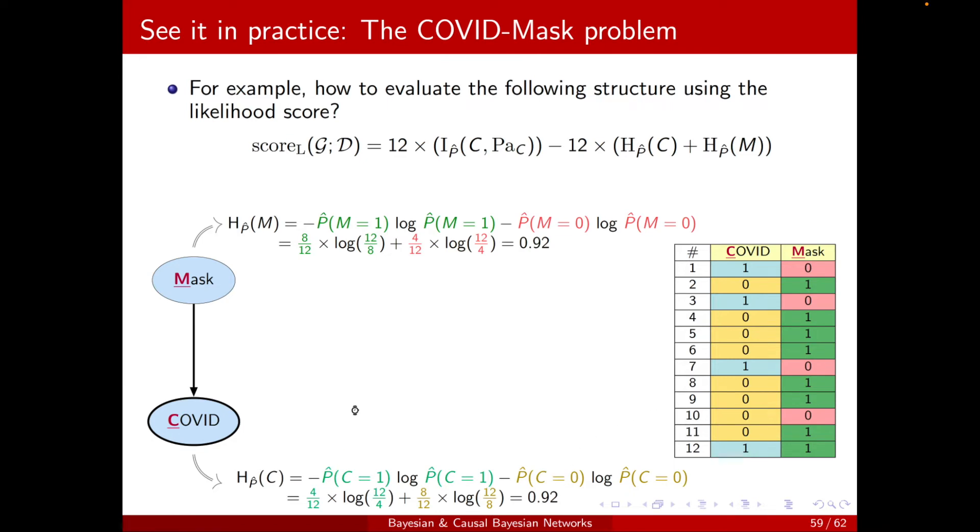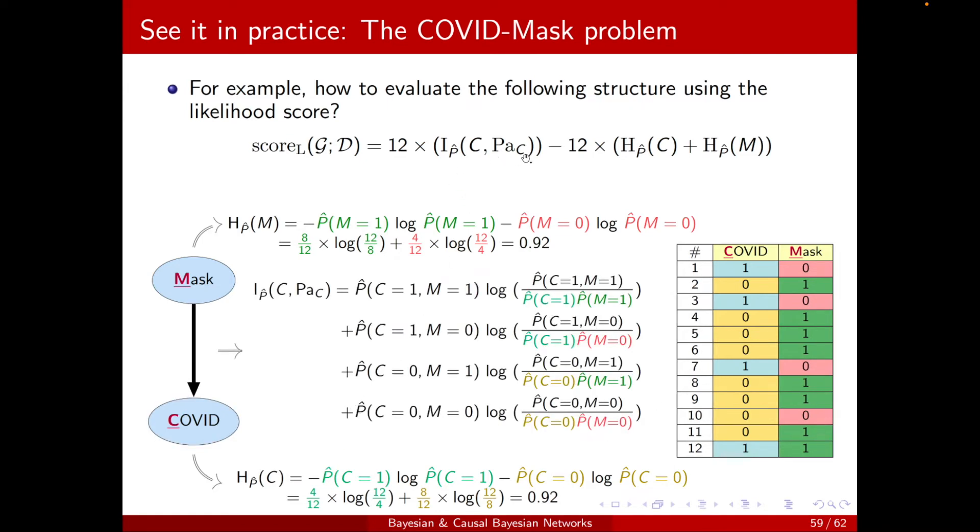Okay, so what about the mutual information? I_P of C and the parents of C, which is M. So I will have C and M. There are four possibilities. I need to consider all four of them. C equal to 1, M equal to 1, times log of P of the joint, C1, M1, and in the denominators, each of them separately.